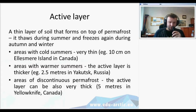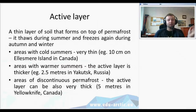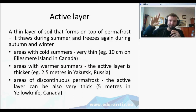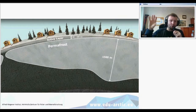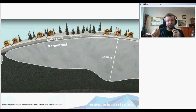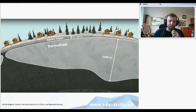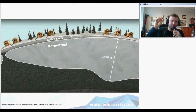In areas of discontinuous permafrost, the active layer can be very thick — around 5 meters, such as in Yellowknife in Canada — so there is permafrost underneath, but the upper part thaws and freezes again up to 5 meters during summer. A graph shows the active layer and the thickness of permafrost beneath it. To the right is the north, where permafrost is thicker due to lower temperatures, and further south there is thinner permafrost but a thicker active layer.